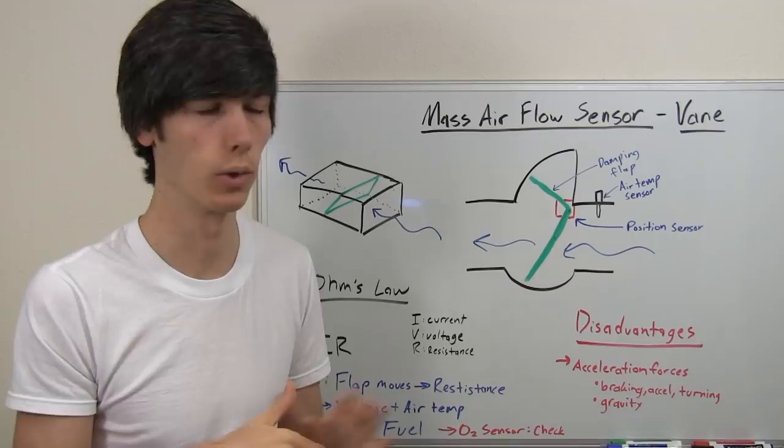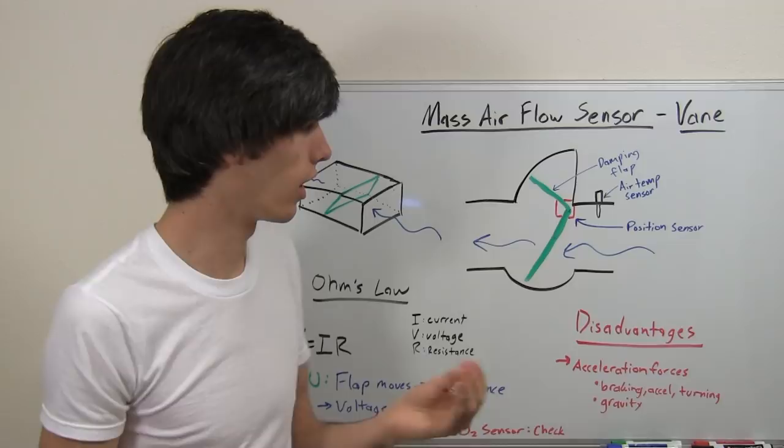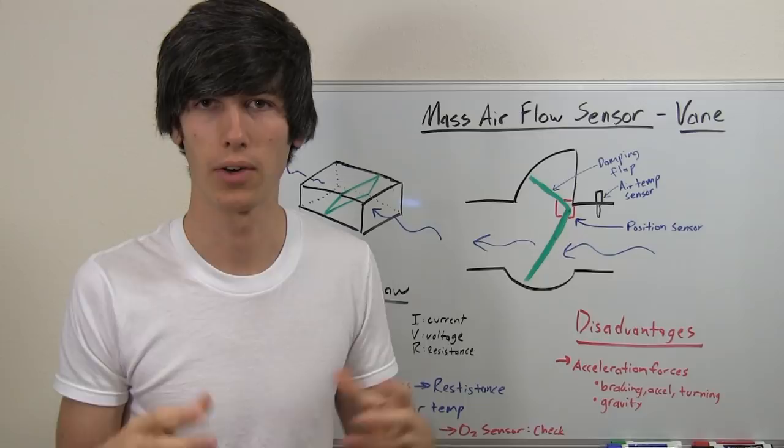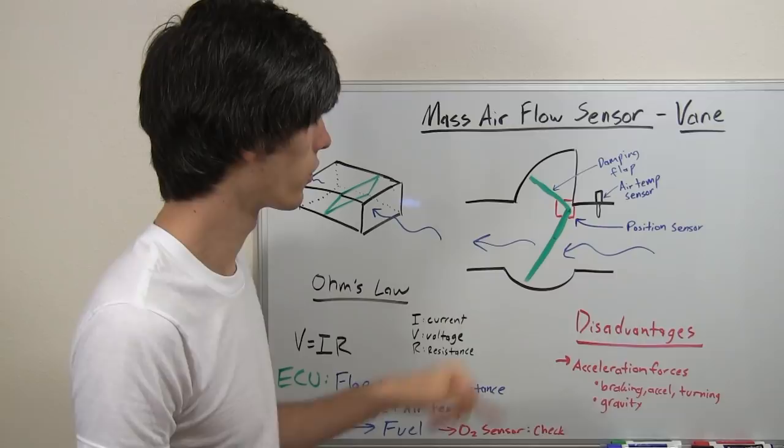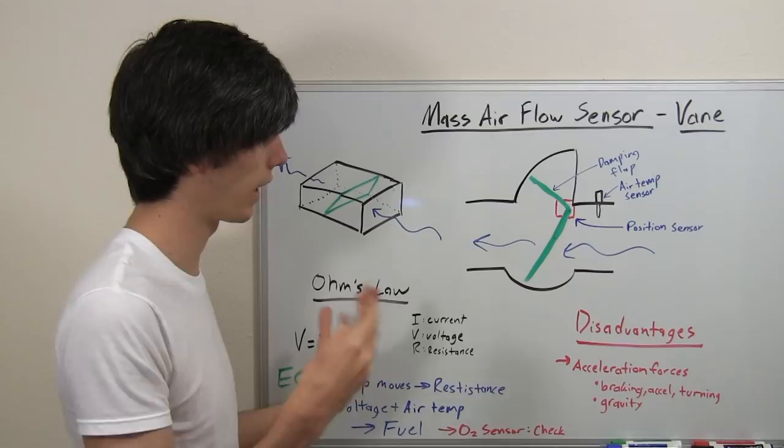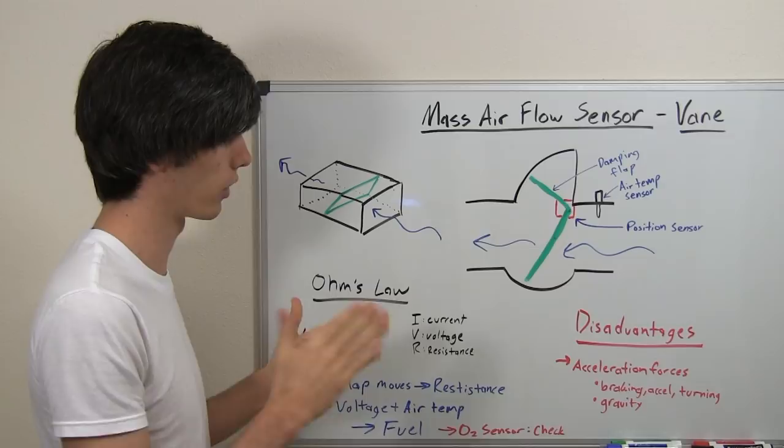Now there's a small problem that if you just base it on this, cold air has more oxygen in it, it's denser than hot air. So another thing you have to add on to this is an air temperature sensor. So the ECU can use this in combination with the voltage change to know the right amount of fuel to put into the engine to have a good ratio of air and fuel.